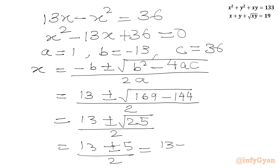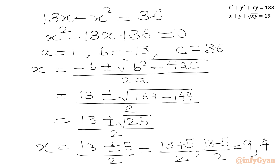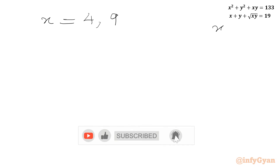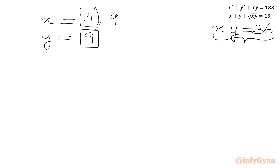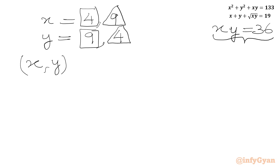This gives x equals 13 plus or minus 5, over 2. So x equals 18 over 2 equals 9, or x equals 8 over 2 equals 4. Using xy equals 36: when x equals 4, y equals 9; and when x equals 9, y equals 4. Therefore the ordered pair solutions are x, y equals 4, 9 and x, y equals 9, 4.